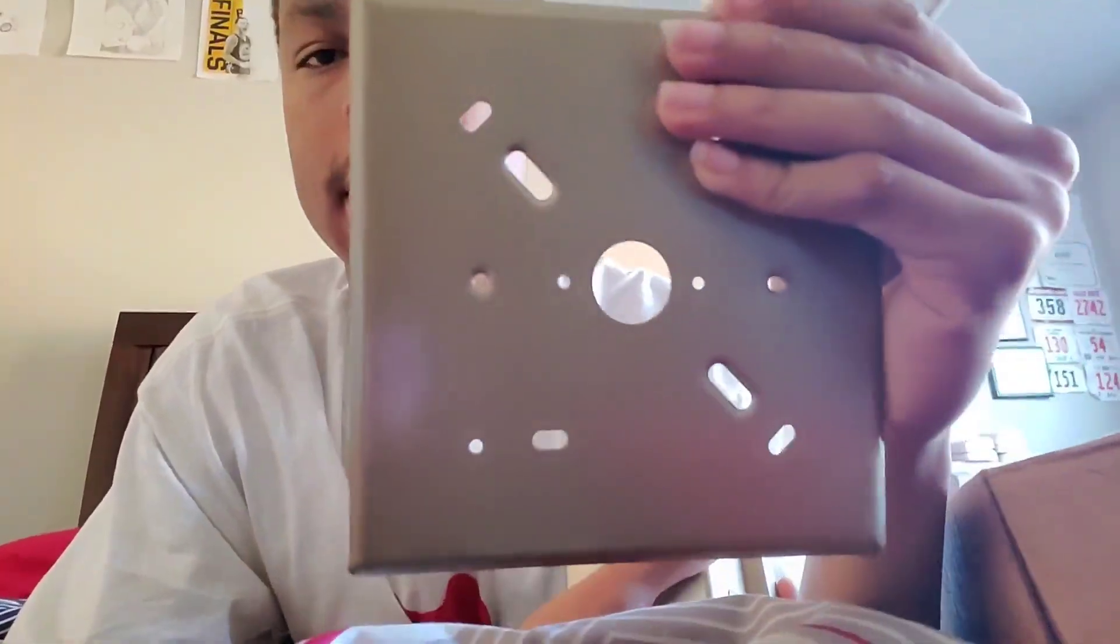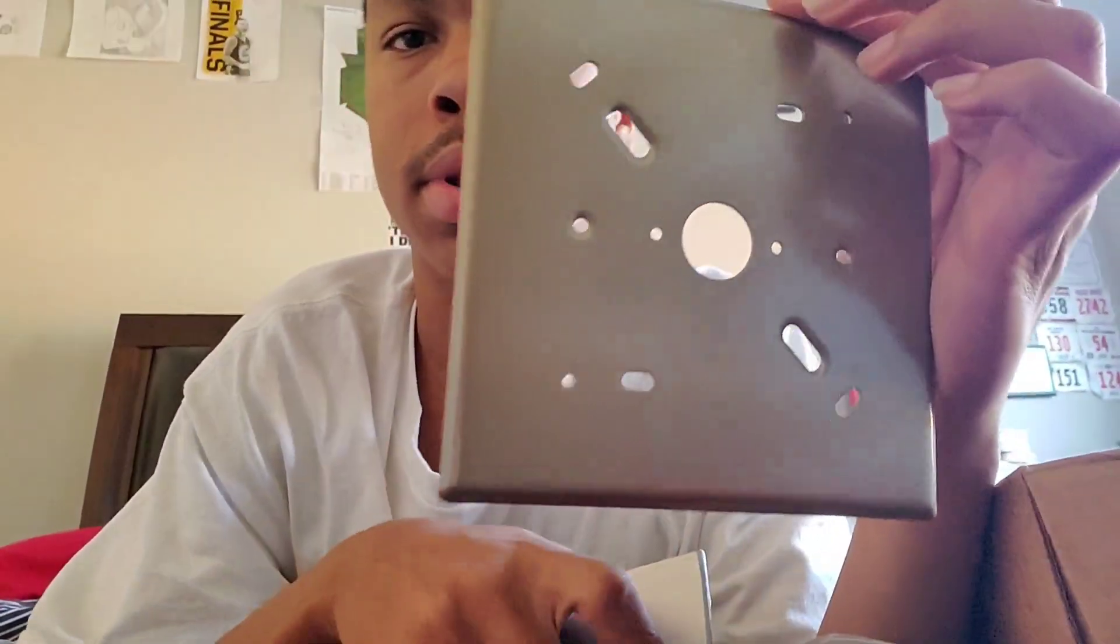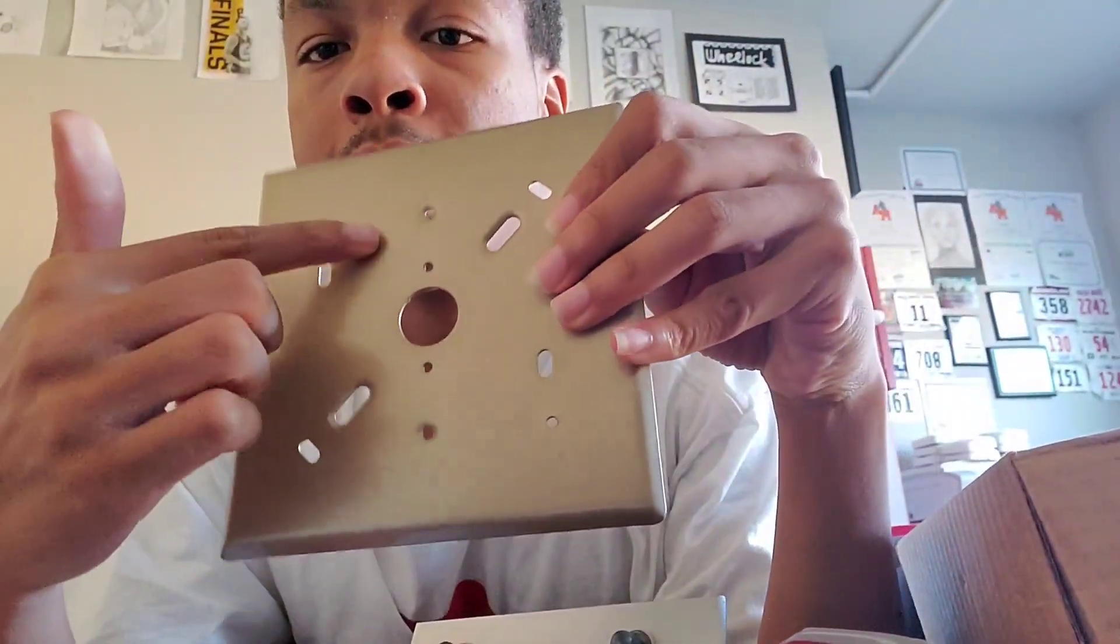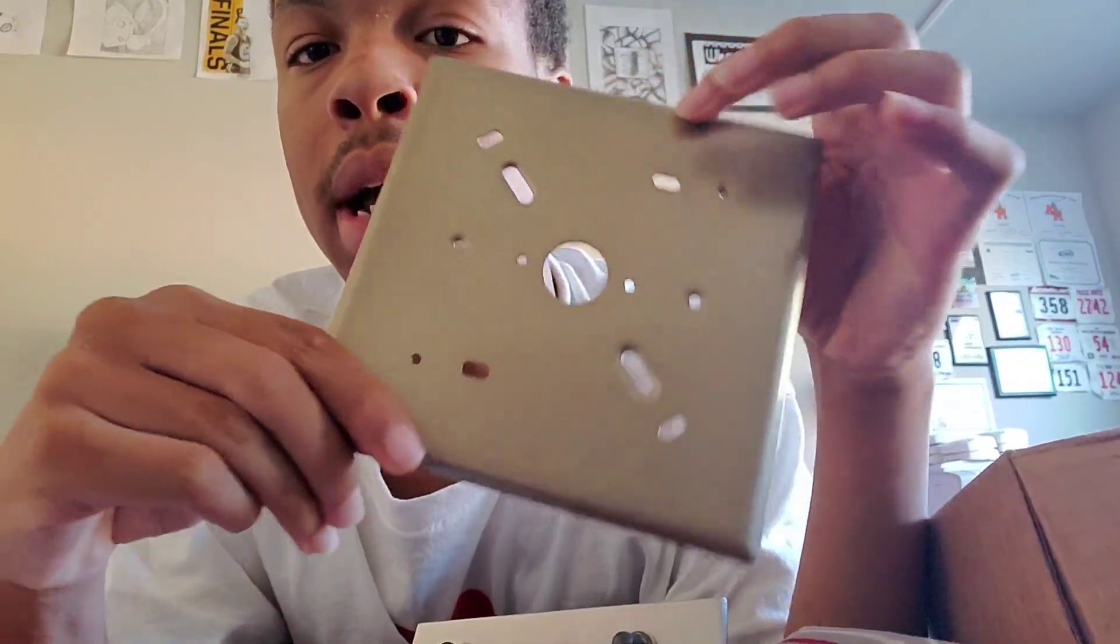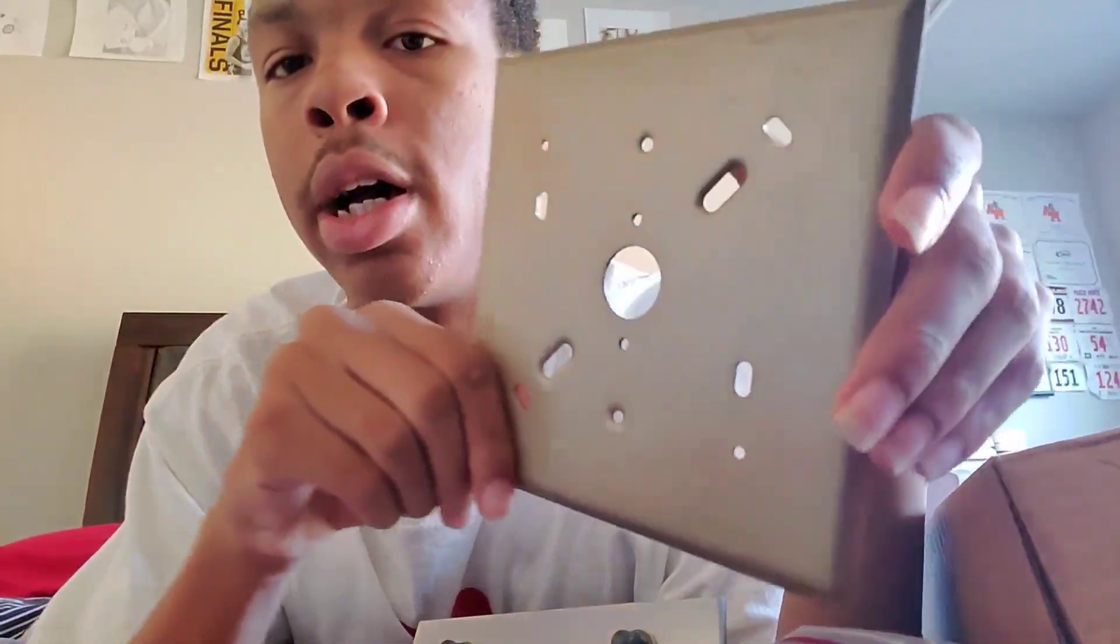This is the mounting plate. As you can see, it mounts on a double gang and a single gang back box, and probably an octagonal back box as well. A lot of options here.